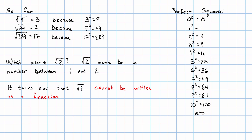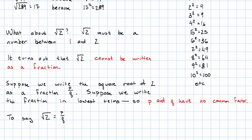Let me show you how. Suppose that we write the square root of 2 as a fraction. Suppose we write that fraction, some whole number p over some whole number q, and we write it in lowest terms, so that those whole numbers have no common factors. To say that the square root of 2 equals p over q means to say that p over q squared is 2.